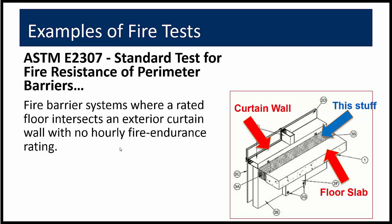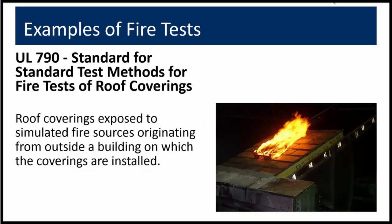This is a familiar topic to many project managers within WJE. UL790 measures the relative ability of a mock-up roof covering to withstand simulated fire sources. This applies to the roof covering, and it is intended to apply to fires originating from outside of the building on which the covering is installed. This test applies to roof coverings for both combustible and non-combustible roof decks, and you may know the resultant ratings as Class A, Class B, and Class C roof coverings.